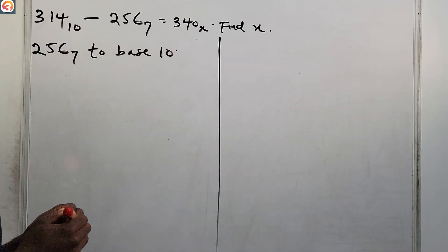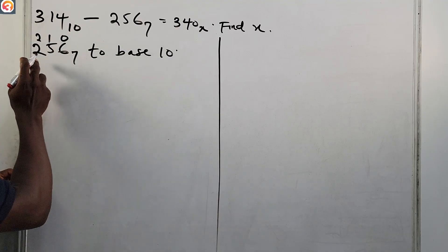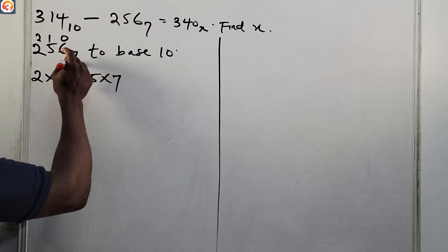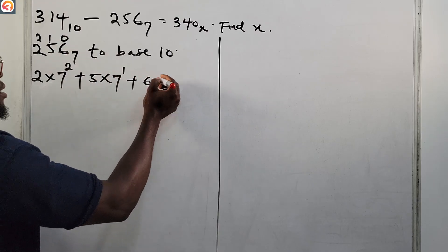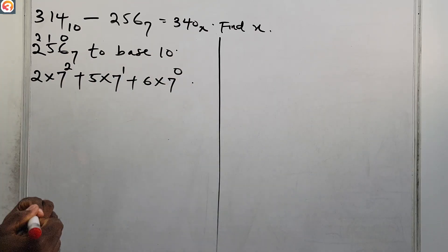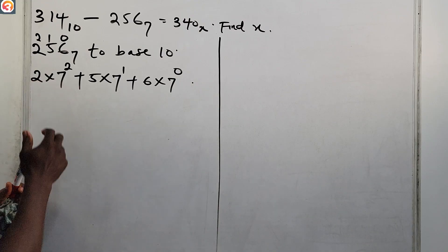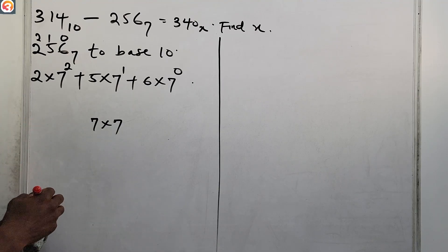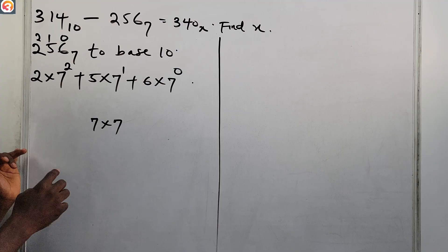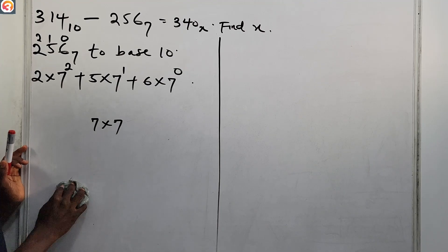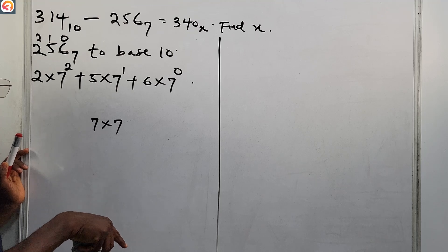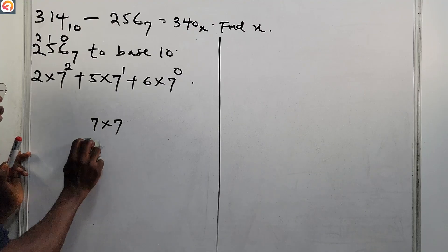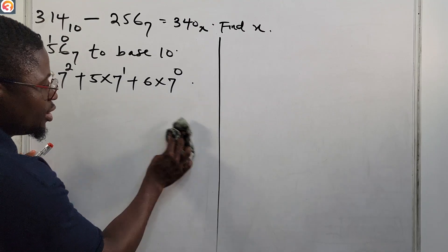First, let's convert 256 base 7 to base 10. The positional indices are 0, 1, and 2. This means: 2 times 7 raised to power 2, plus 5 times 7 raised to power 1, plus 6 times 7 raised to power 0. Now let us simplify: 7 raised to power 2 is 7 times 7, which is 49 from your multiplication table. Any knowledge learned prior to this time is always necessary — do not throw it away.